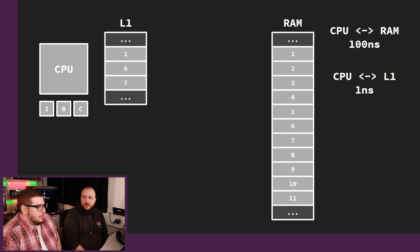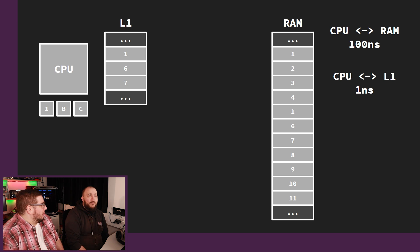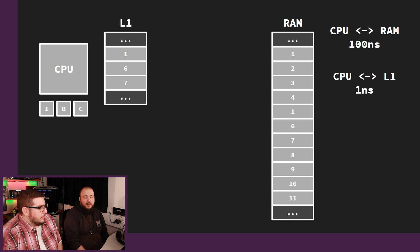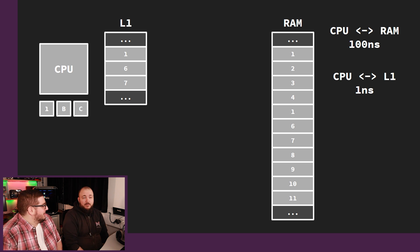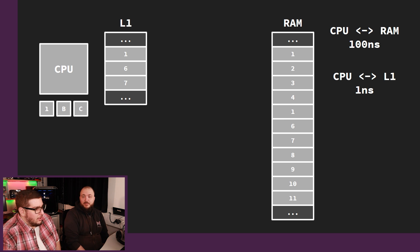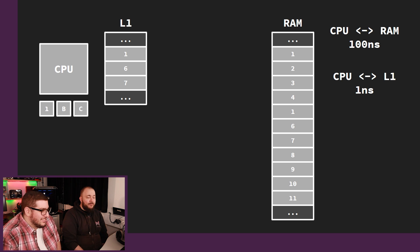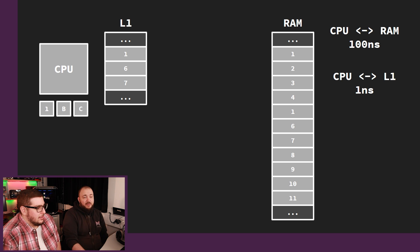How fast is a cache hit? About one nanosecond. You wouldn't notice a single cache miss, but you would notice if a million cache misses were happening. It's the ratio between a hundred nanoseconds and one nanosecond, times a million. Because it would happen every single time — that's a lot.